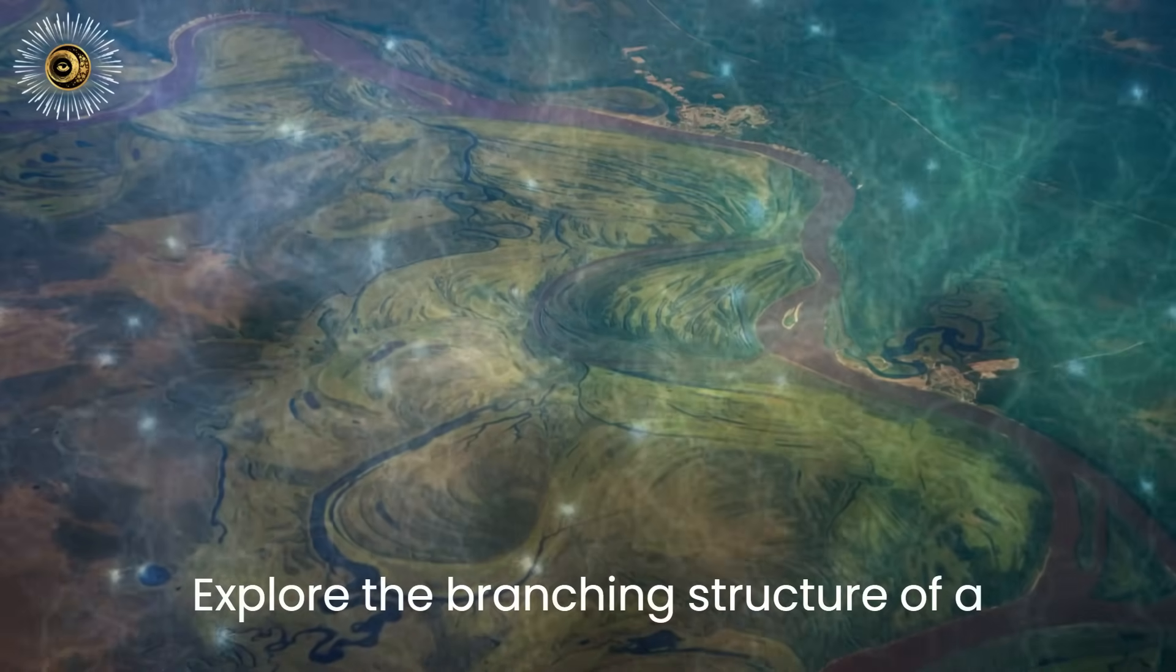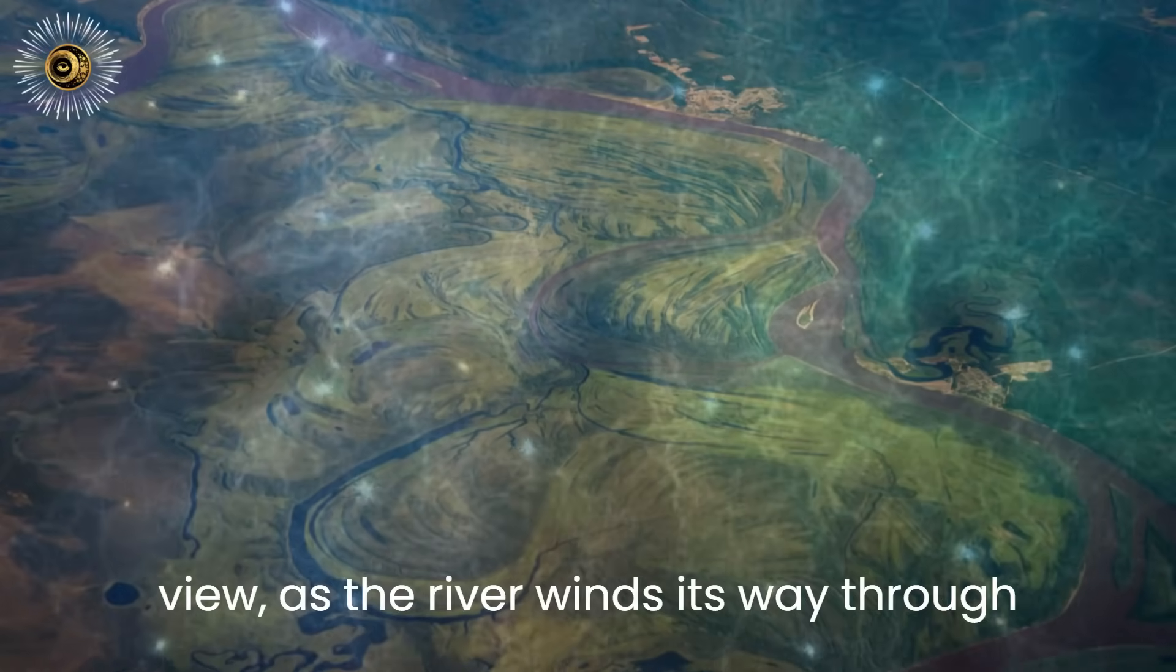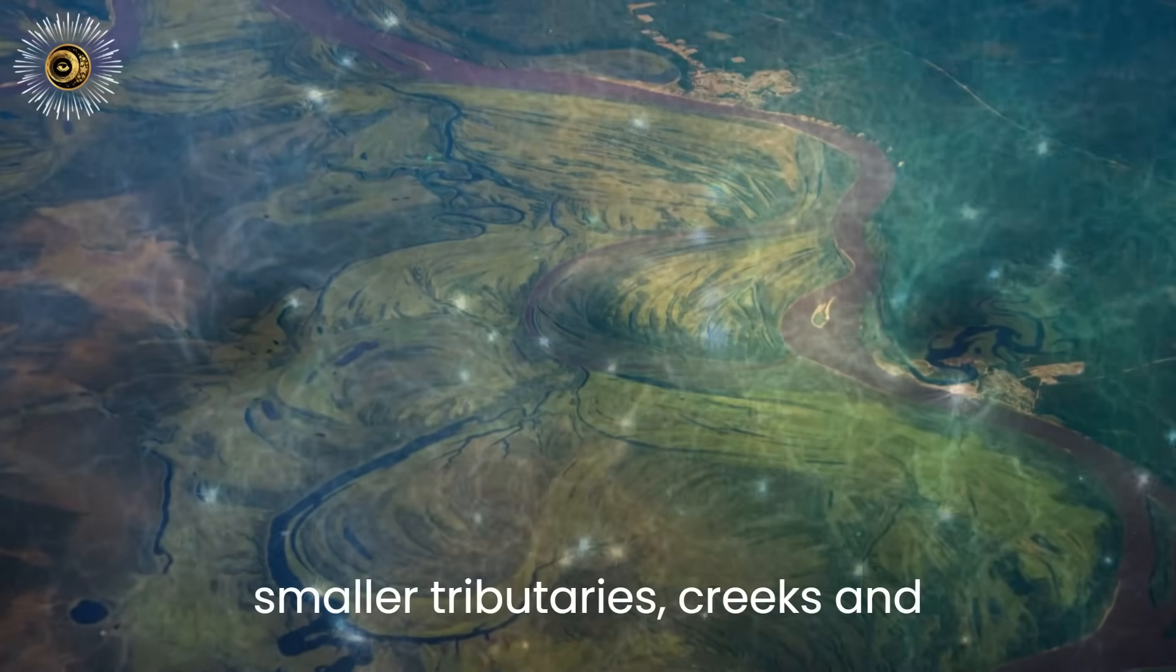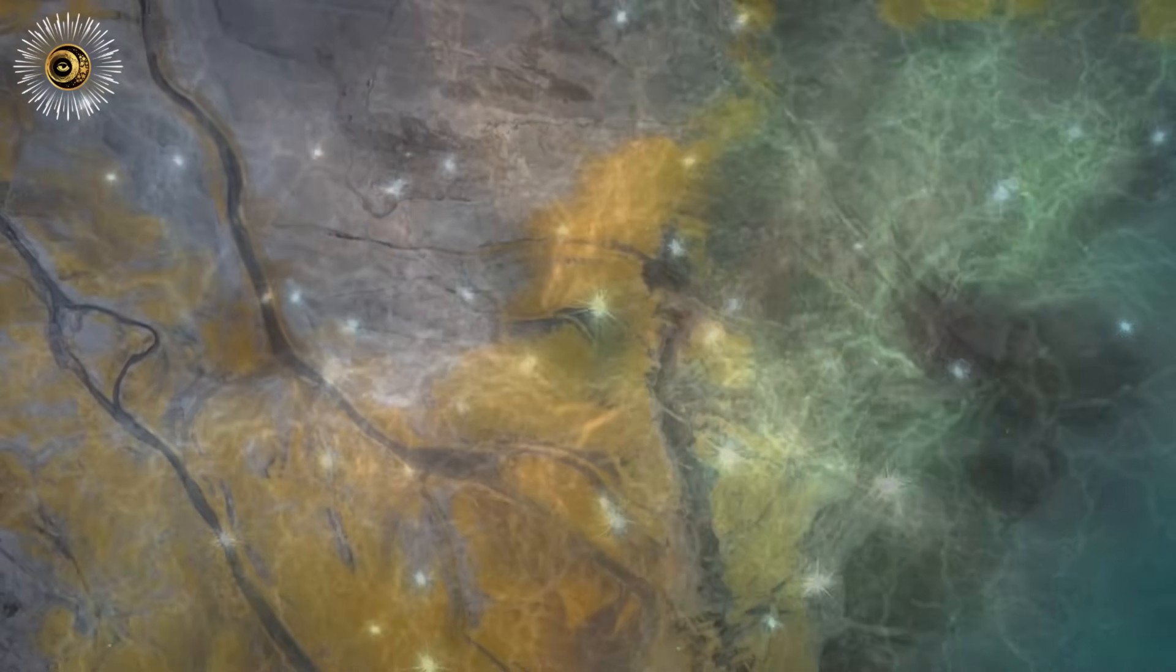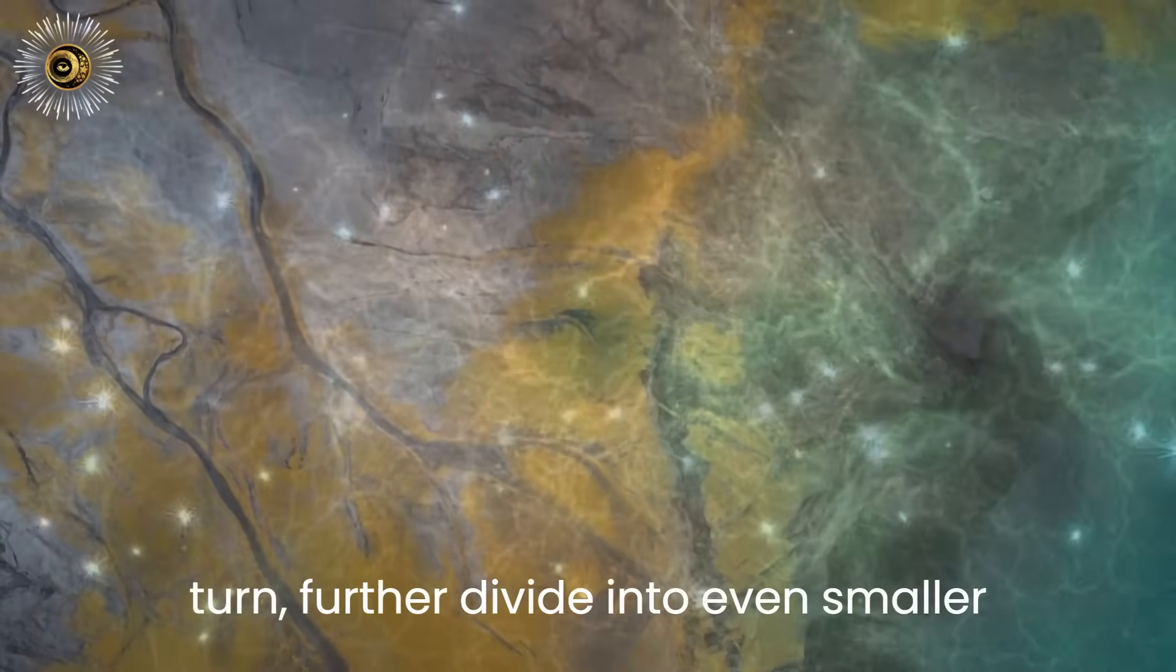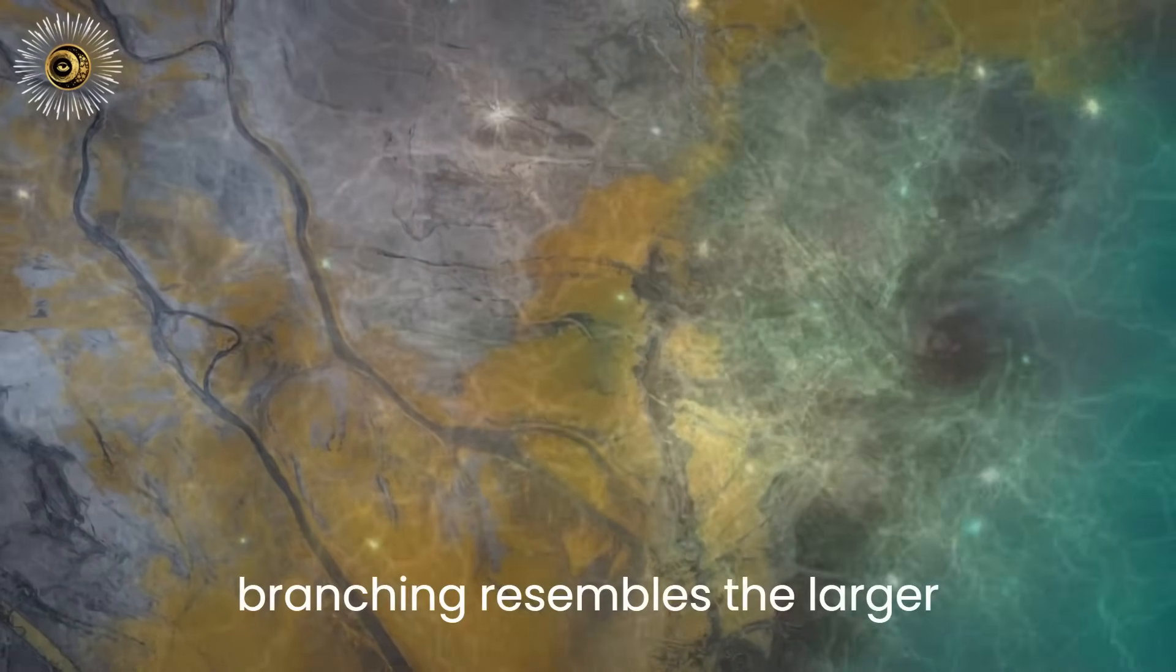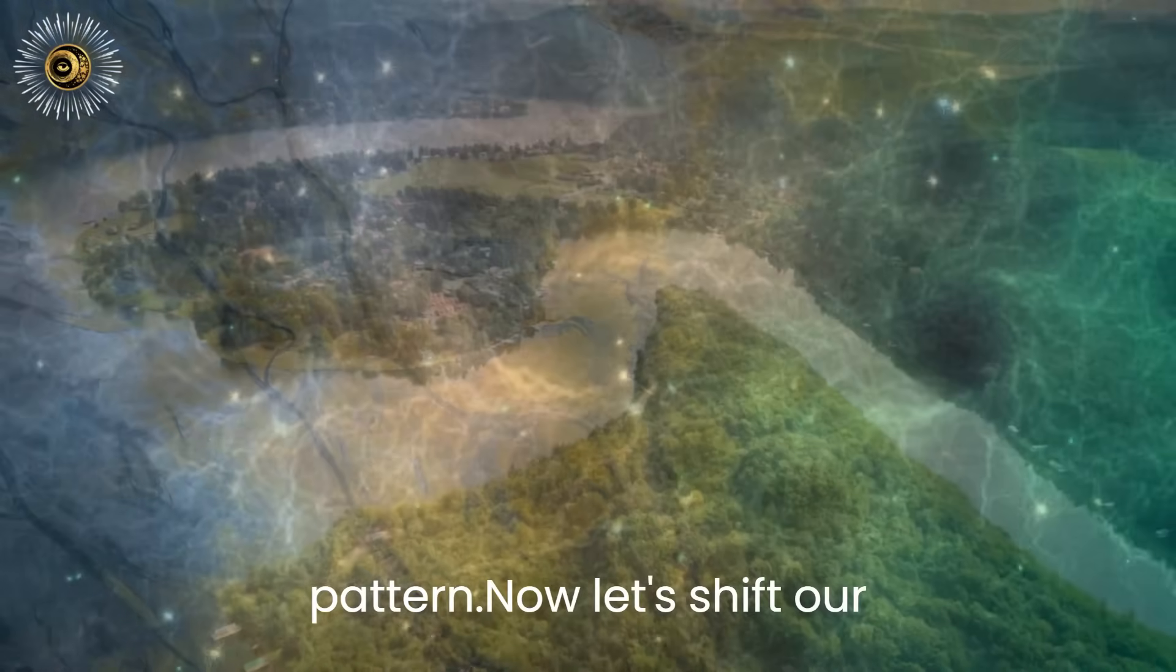Explore the branching structure of a river system. From a bird's eye view, as the river winds its way through the landscape, it branches out into smaller tributaries, creeks, and streams. These tributaries, in turn, further divide into even smaller channels and rivulets. Each level of branching resembles the larger structure, forming a self-similar pattern.